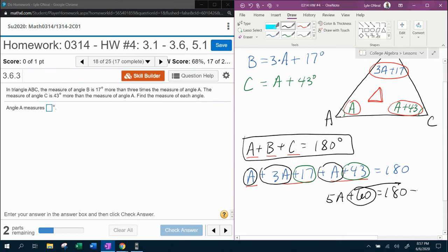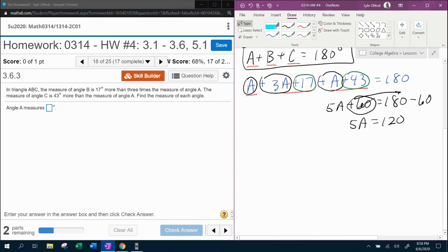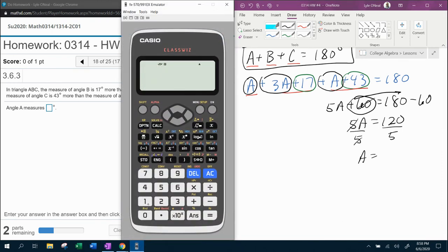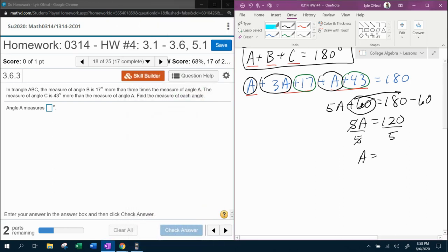60 wants to move over, makes minus 60. 180 minus 60 is 120. And then if I scroll up just a bit and divide both sides by 5, we're going to get the measure of angle A. I'm going to check that with the calculator. That is 24 degrees.